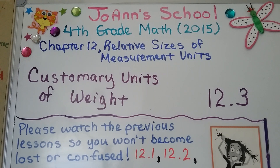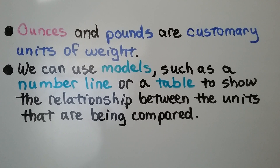Lesson 12.3: Customary Units of Weight. The last two previous units for this chapter are linked in the description. Ounces and pounds are customary units of weight. We can use models such as a number line or a table to show the relationship between the units being compared.